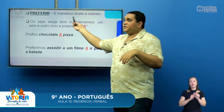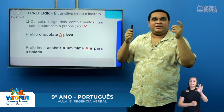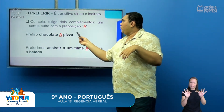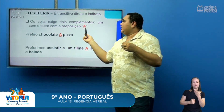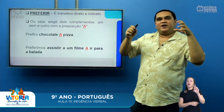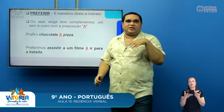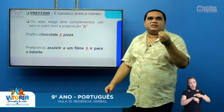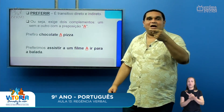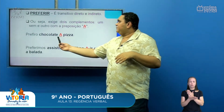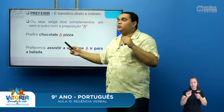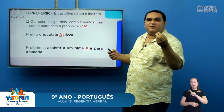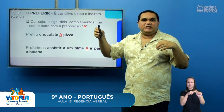O verbo preferir é um verbo bitransitivo — ele vai receber dois complementos: um objeto direto e um objeto indireto ao mesmo tempo. Por conta disso, o verbo preferir sempre vai receber a preposição 'a'. Você sempre vai preferir alguma coisa a outra. É muito comum dizer 'eu prefiro chocolate do que pizza', mas está incorreto. O correto é: 'Prefiro chocolate a pizza.' Outro exemplo: 'Preferimos assistir um filme a ir à praia.' Com o verbo preferir, sempre utilizamos a preposição 'a'.